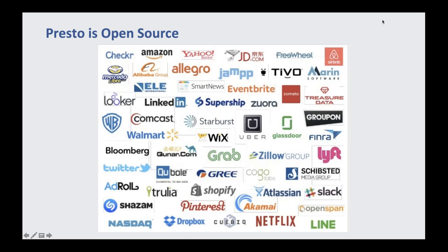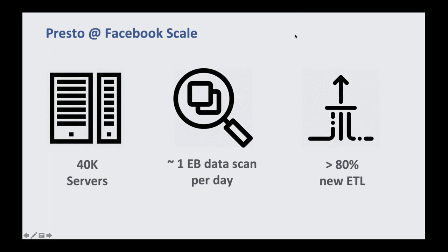Presto is open source. It was originally open-sourced in 2012-2013 from Facebook and has been widely adopted by the community. Many big companies are using it, including Alibaba, Uber, Twitter, etc. We're going to briefly describe the scale of the Presto use case within Facebook. As of today, we have 40k servers. Each day, we scan about one exabyte of data. In addition to interactive analytics, we also have ETL jobs — more than 80% of new ETL jobs run on Presto.